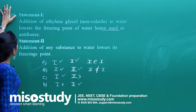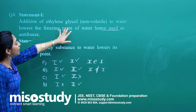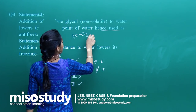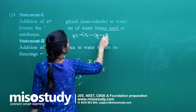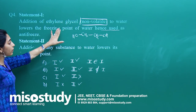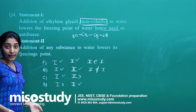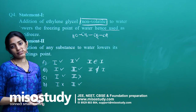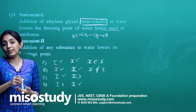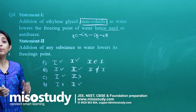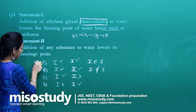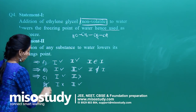Statement 1: Addition of ethylene glycol — formula CH₂OH–CH₂OH — which is a non-volatile substance to water will lower the freezing point of water, hence it is used as an antifreeze. Whenever you want water to not freeze at 0°C but rather at, say, minus some degrees, you add ethylene glycol. Statement 1 is correct, so the answer could be A, B, or C.